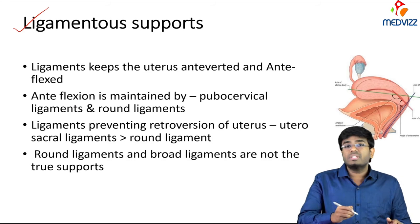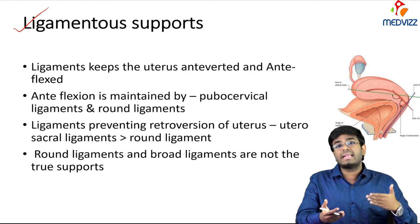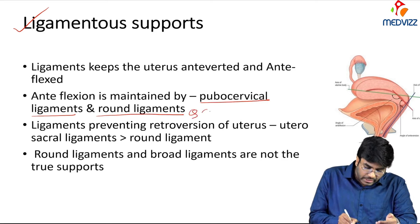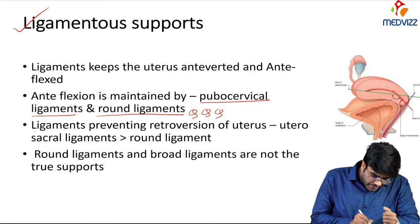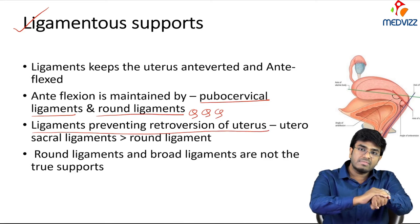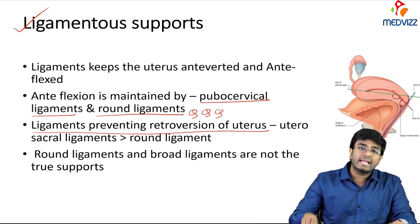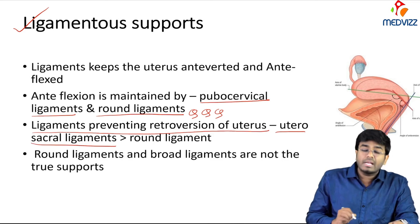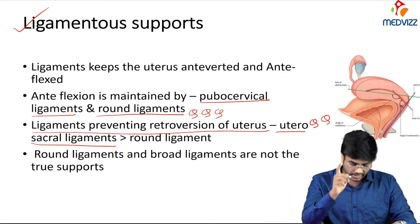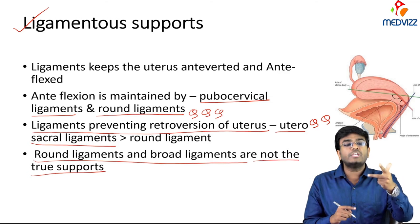The round ligament maintains the uterus in antiverted and antiflexed position; antiflexion is maintained by the round ligament and pubocervical ligament. The uterosacral ligament prevents retroversion of the uterus — very important MCQ point. Once the uterus is retroverted it can easily prolapse. Round ligament and broad ligament are not the true supports; the true supports are pubocervical, cardinal, and uterosacral ligaments.